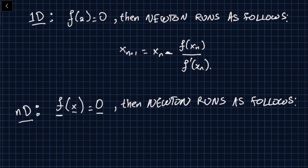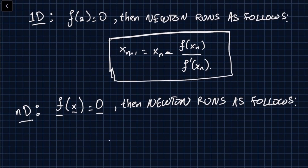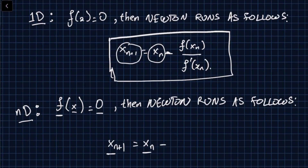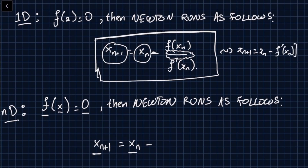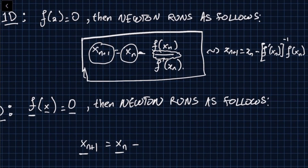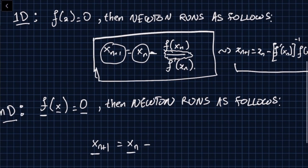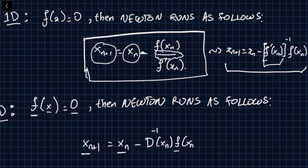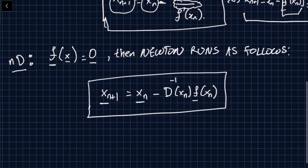In the multidimensional case, x_{n+1} and x_n are vectors instead of scalars. Since we're dealing with vectors, we don't have division as such — instead we use an inverse and multiplication. We can write the 1D case as [f'(x_n)]^{-1} * f(x_n). In n dimensions, instead of f', we have a matrix of derivatives D(x_n), inverted and multiplied by the vector-valued function f(x_n).